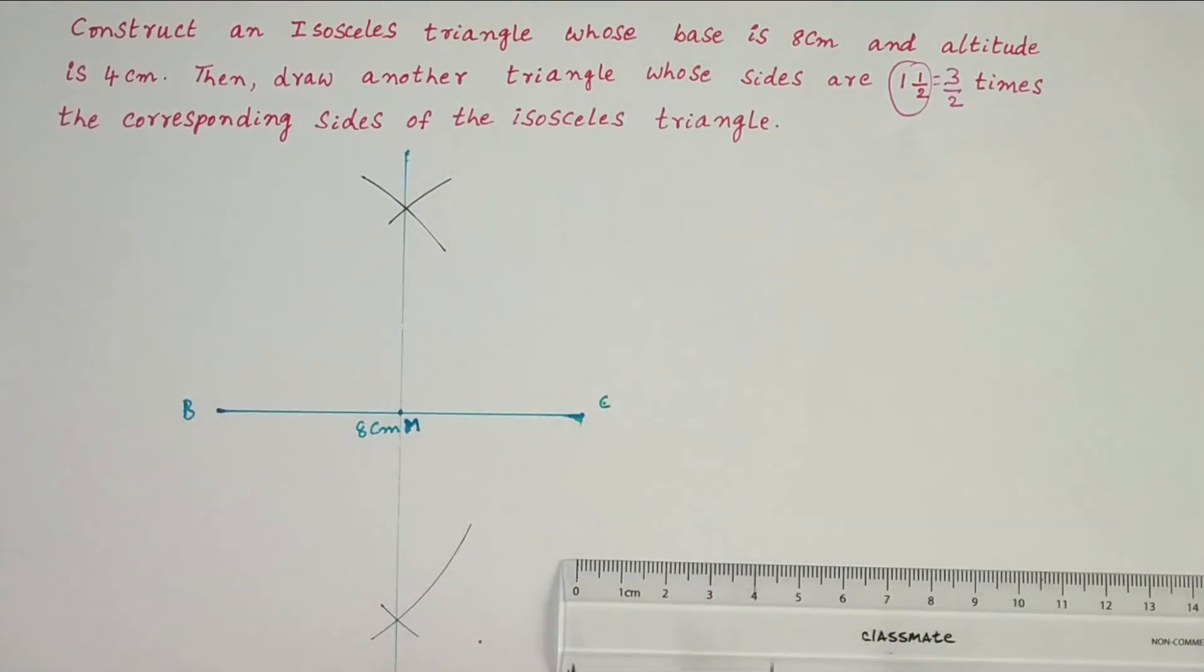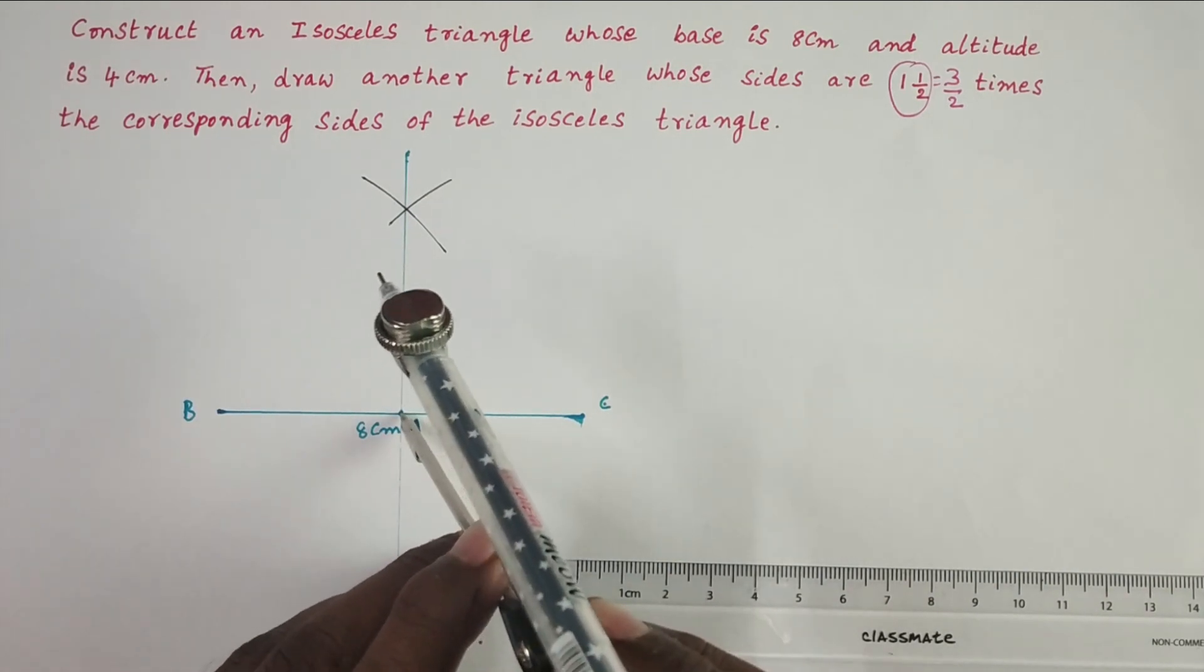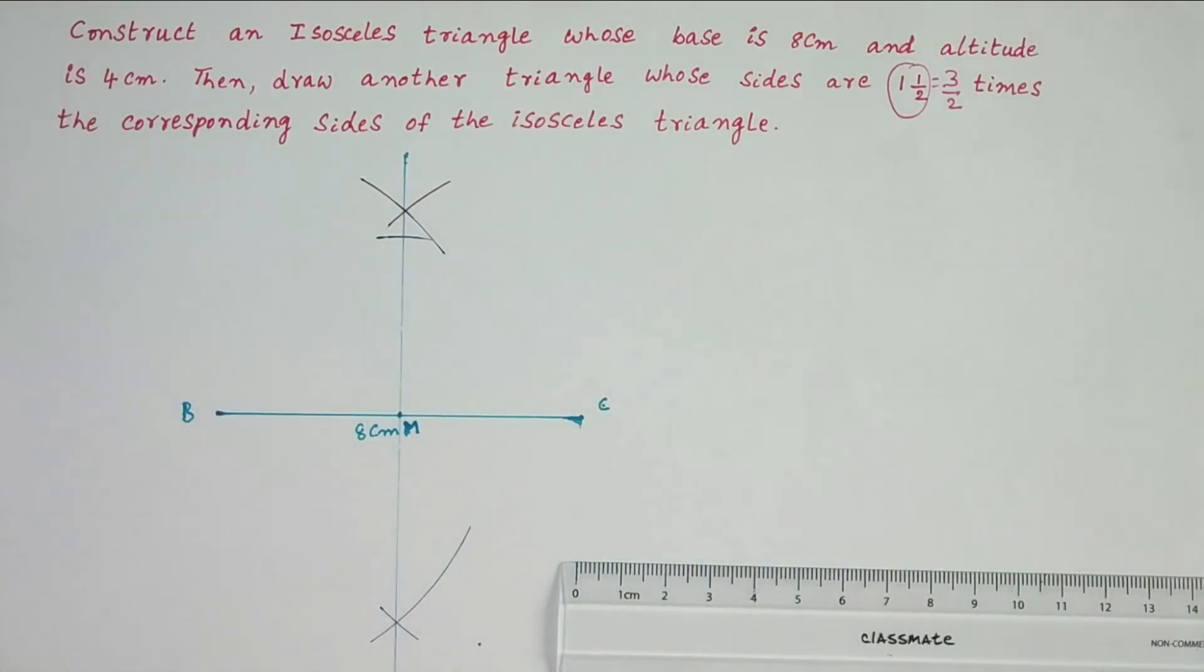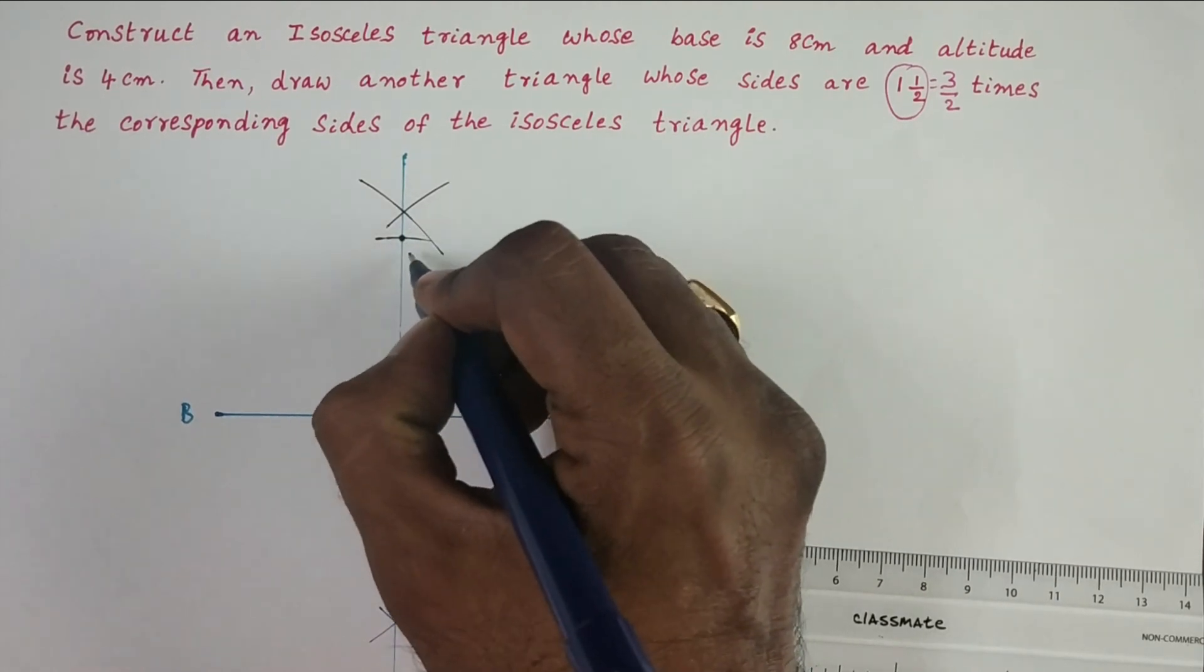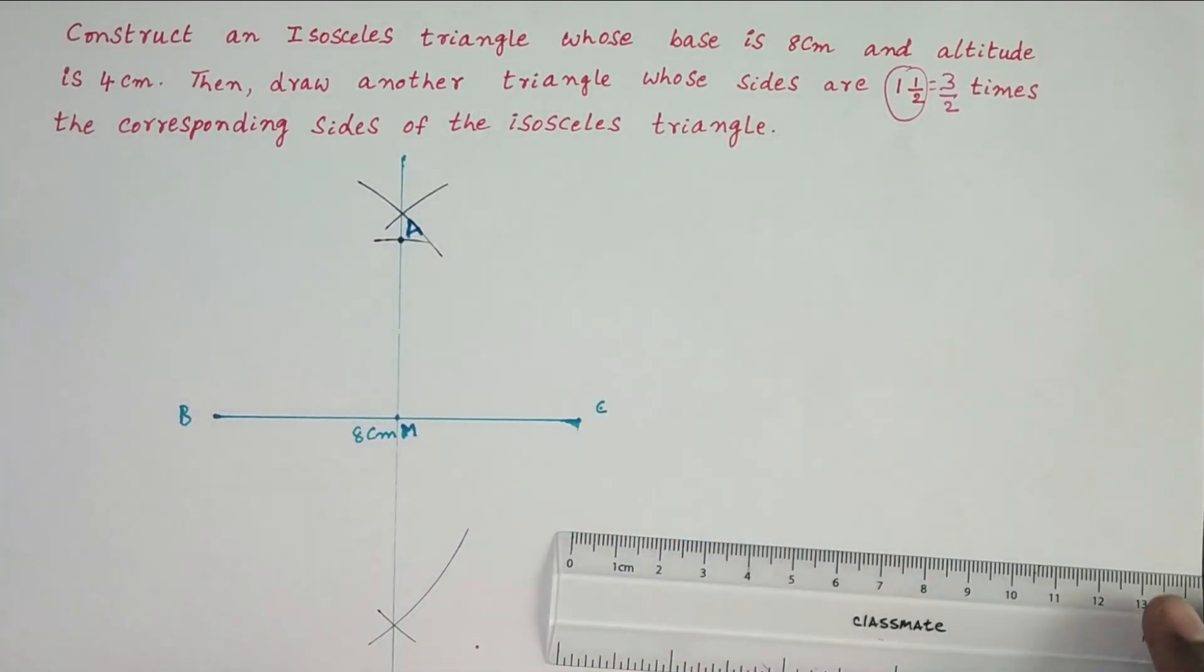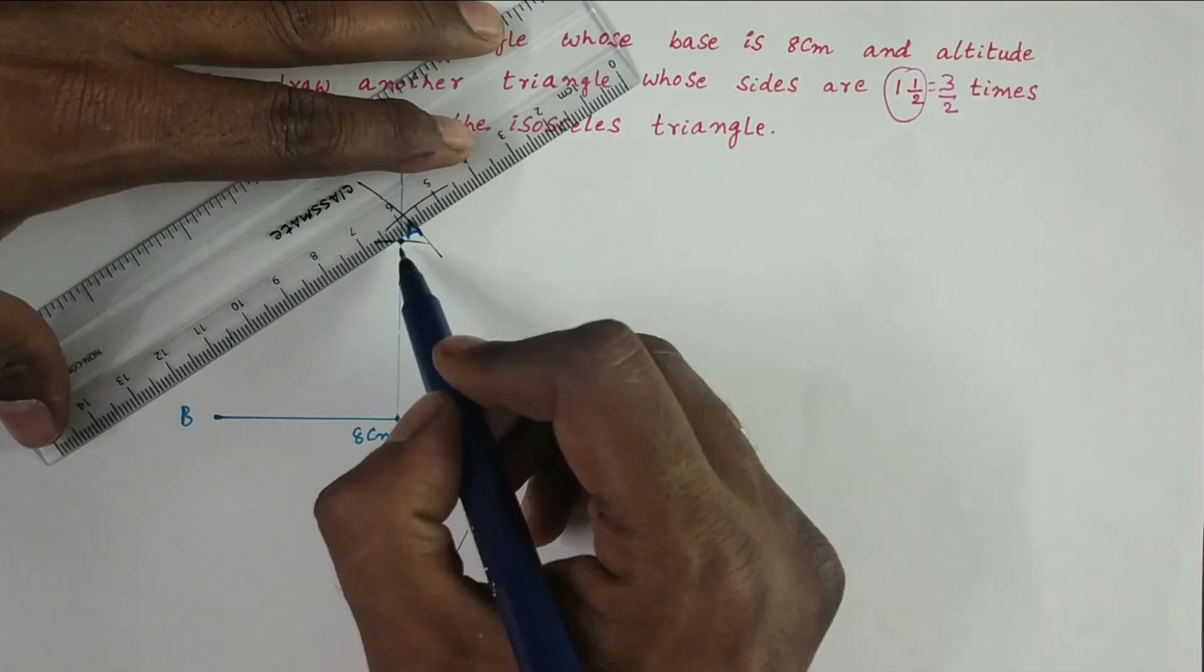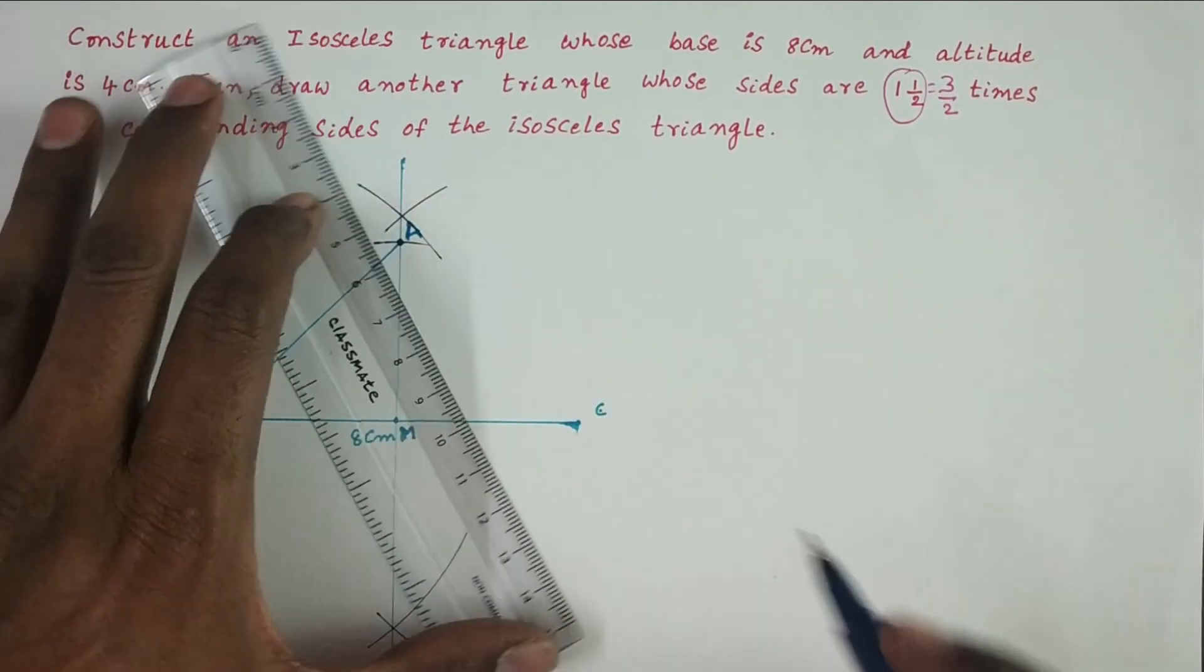Take M as center, 4 cm as radius, and draw an arc above the triangle BC. Take the intersecting point of the perpendicular bisector and this arc as A. Now join AB and AC.